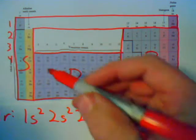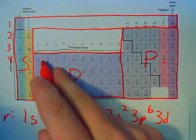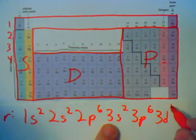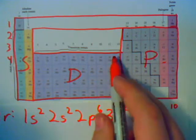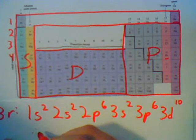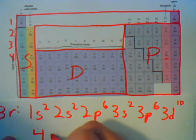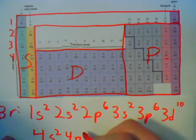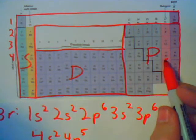So we say 3d, because remember, although it's in the 4th row, it's moved down one. So 3d, and then there's 10 elements, so 3d10, and then you go back and start the 4th row. So I'm just going to write it down here, 4s2, 4p5, and that takes us to bromine.